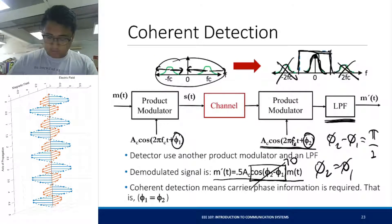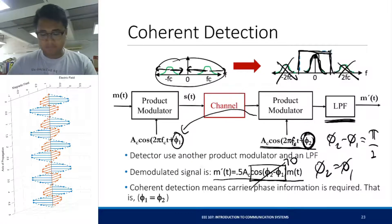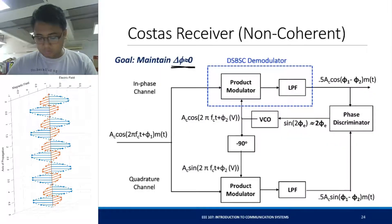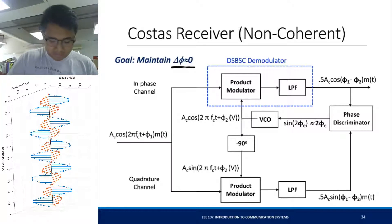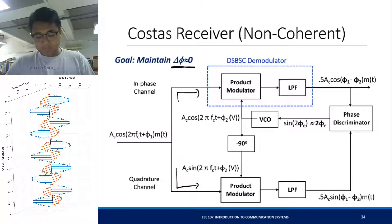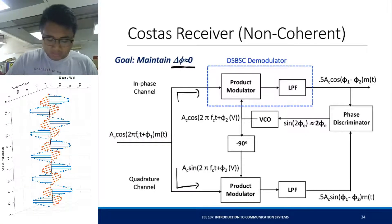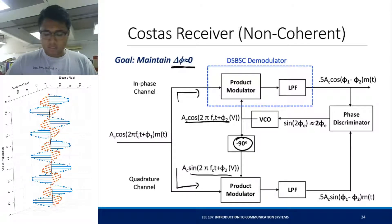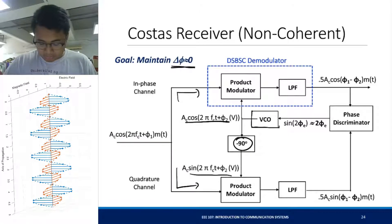Using a control system, phi2 is adjusted to be coherent with phi1. The Costas receiver works by feeding your signal into two channels: an in-phase channel and a quadrature channel. The in-phase channel has a cosine carrier, and the quadrature channel has a sine carrier because of a 90-degree phase shifter. A voltage-controlled oscillator is used as the source of these two carriers and is fed into a product modulator.